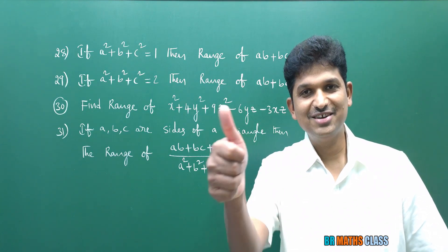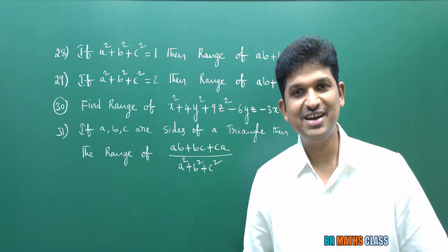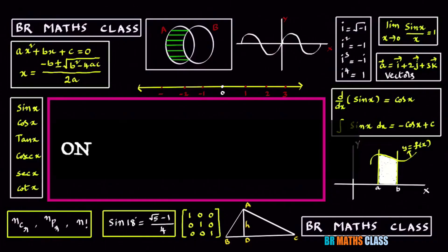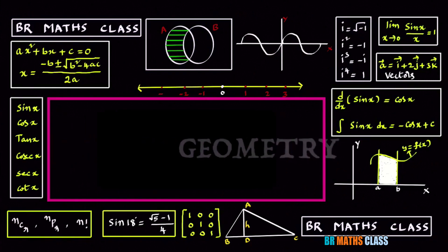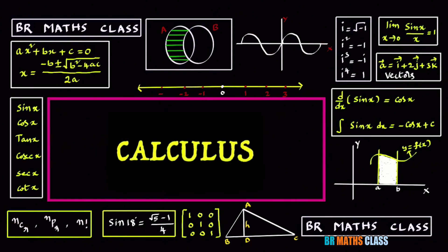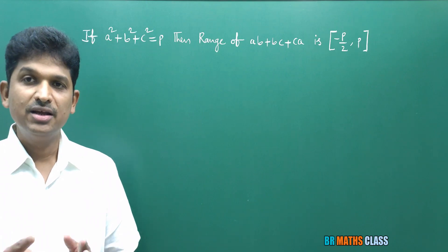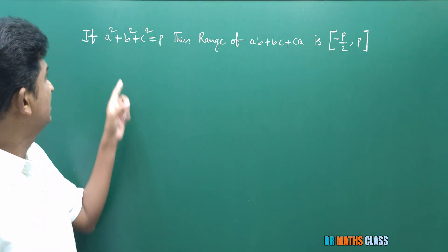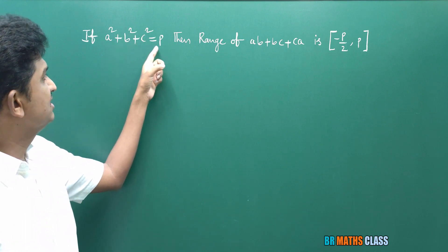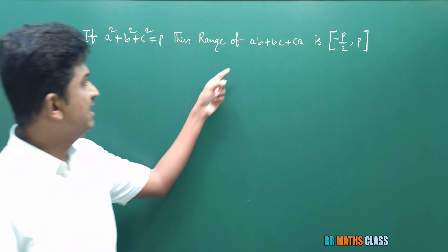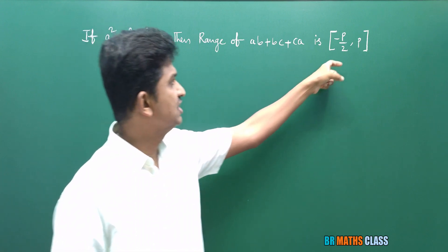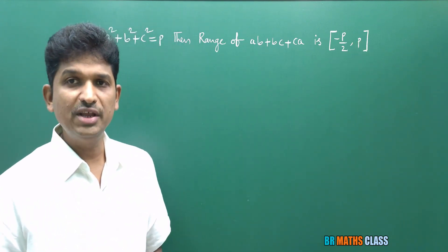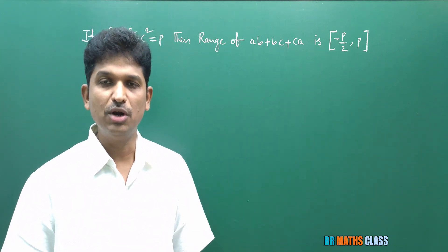Before starting this video, please drop a like. Without much delay, let's begin the class. To understand today's four problems, you need to know this theory: for any three real numbers A, B, C, if A² + B² + C² = P, then the range of AB + BC + CA is the closed interval [-P/2, P]. The first two problems can be done very easily with the help of this formula.